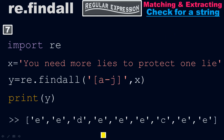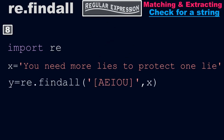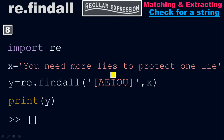Example number eight. Import the re library. x equals 'you need more lies to protect one lie'. Then y equals re.findall([AEIOU], x). Take the print of y — its output will be an empty set. We are checking for a string. Here the regular expression [AEIOU] is matching and extracting only those characters which are in uppercase.